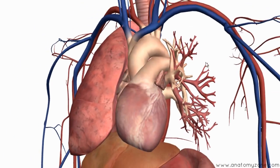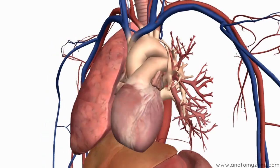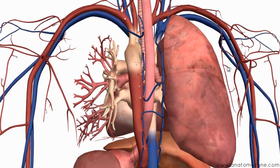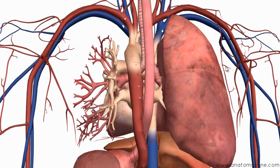I've just brought the cardiovascular system in and I'm going to rotate the model around posteriorly so you can see the other structures that enter the lung. You've got the pulmonary veins and the pulmonary arteries, which enter the lung at the hilum.